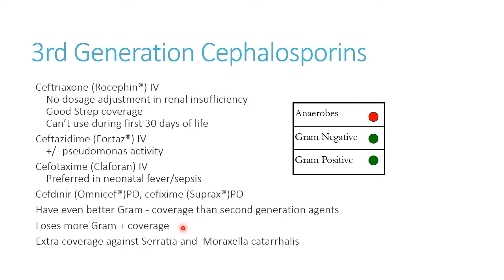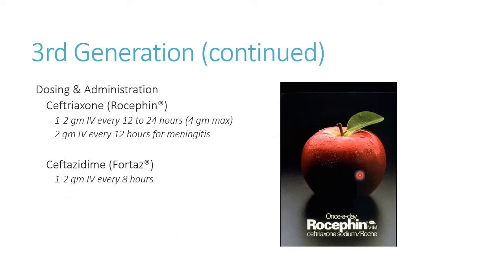Cephalosporins are time-dependent killers, just like penicillins. Ceftriaxone — the 'one' in its name is a useful mnemonic — needs to be given only once daily thanks to its long half-life. For severe infections like meningitis, you may see it given twice daily, but for most uses once daily is sufficient. You can give a dose in the ER and the patient doesn't need another dose until the next day. Ceftazidime is not used frequently for pseudomonal coverage due to resistance issues.